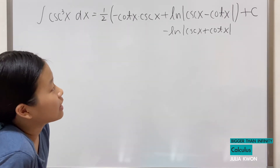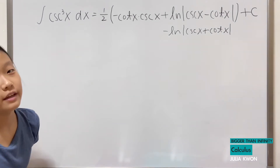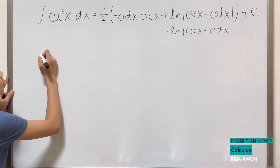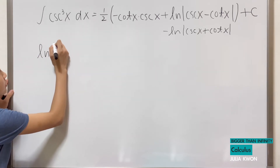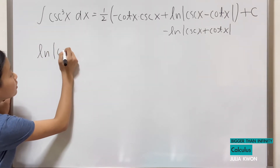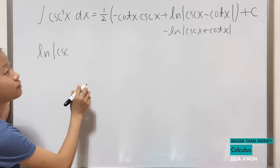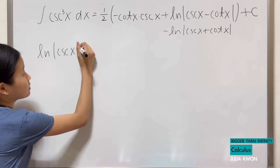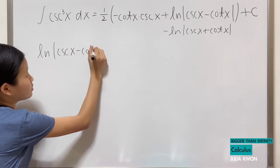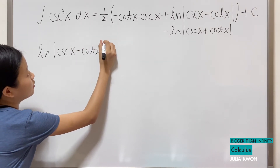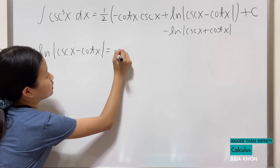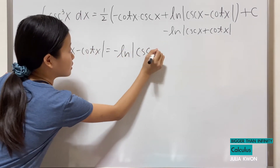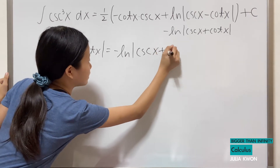I would like to show you how ln of the absolute value of cosecant x minus cotangent x is equal to negative ln of the absolute value of cosecant x plus cotangent x, because these are both correct answers but it's not obvious at first glance that they're equal to each other. So our problem in this video is proving that equality.